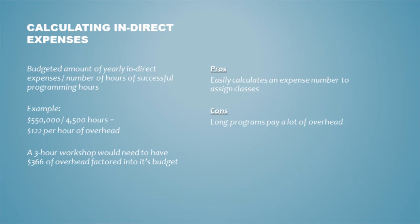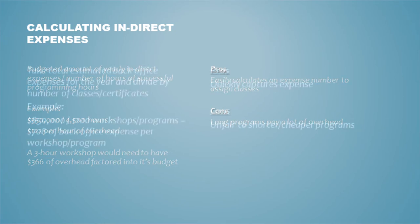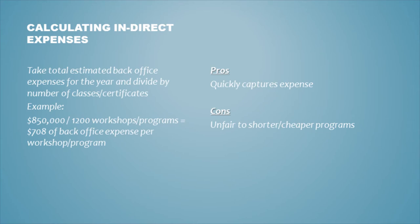The pro of this method is it's easy to calculate an expense number to assign to a class. Unfortunately, long programs end up paying a lot of overhead. Another way to calculate indirect expense is to take the same total overhead expenses for the year and divide by the number of classes instead of hours. For example, $850,000 divided by 1,200 workshops gives $708 of back-office expense per workshop — but this is unfair to shorter or cheaper programs.